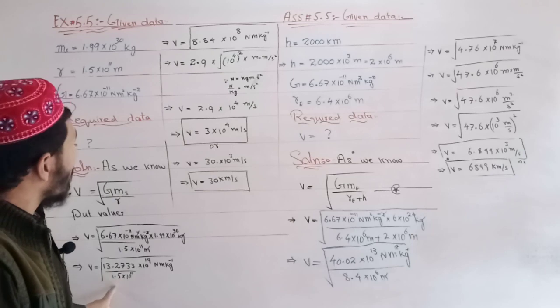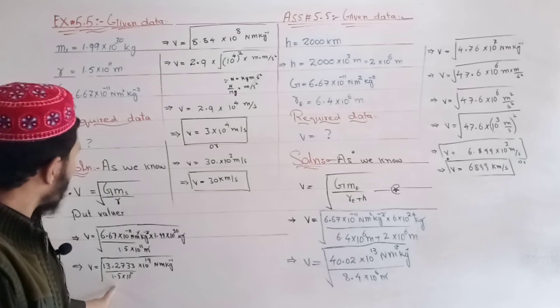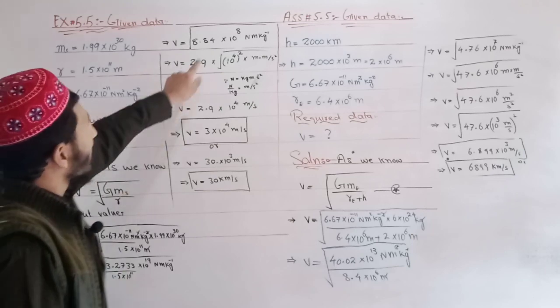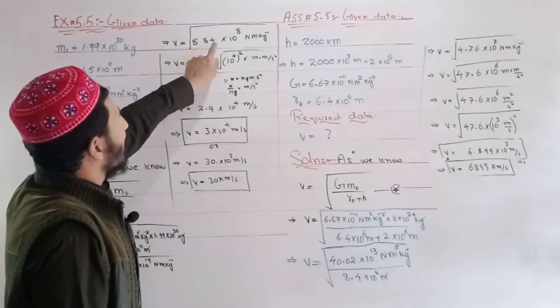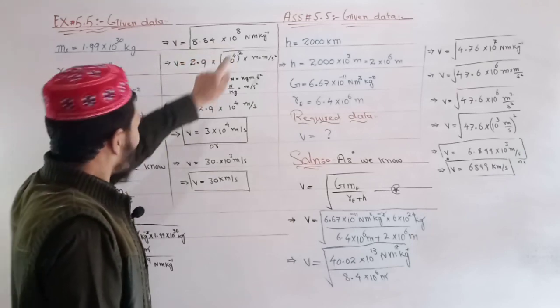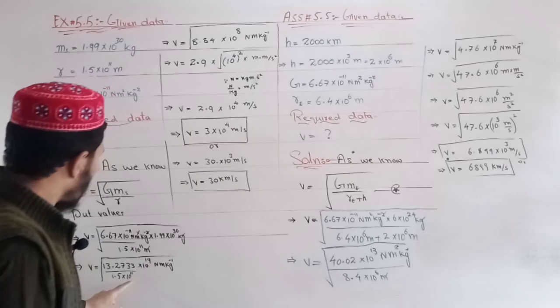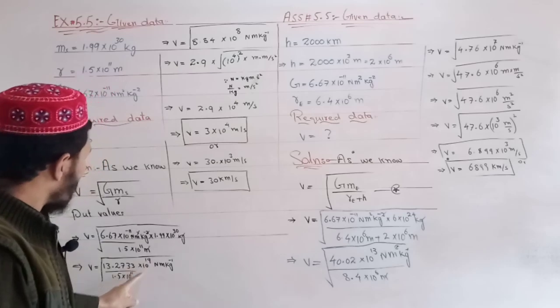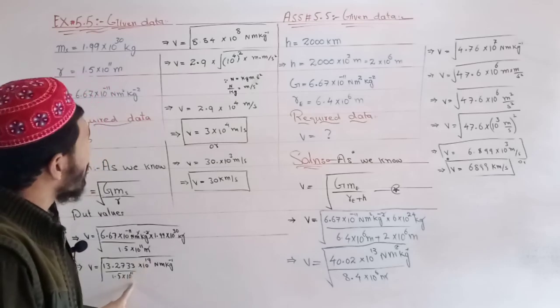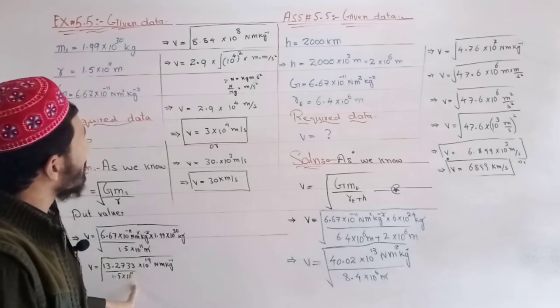Dividing the values, the result is 8.84 × 10^19.